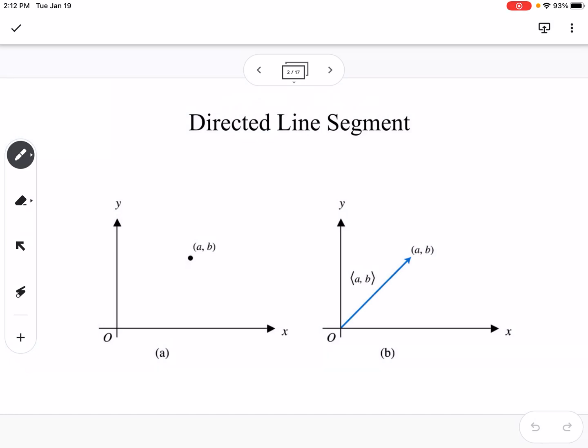A vector is a directed line segment. If we have the point AB, we write a vector using angled brackets. So if this was the point (3, 4) starting at (0, 0), we would write that as vector (3, 4).